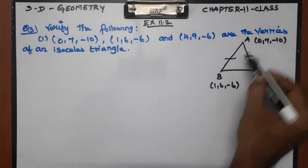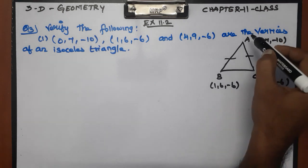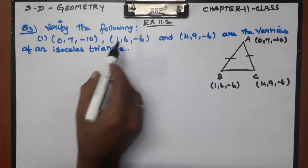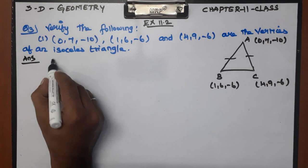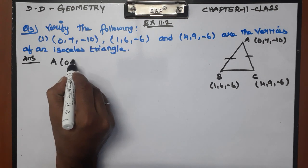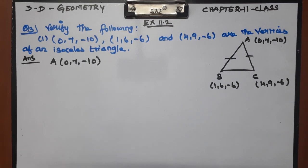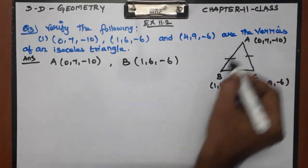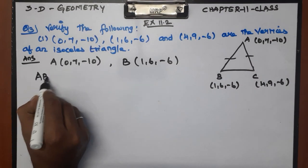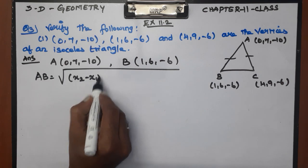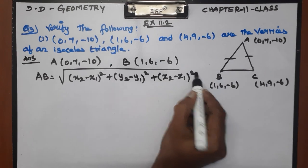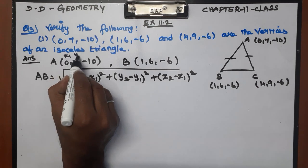An isosceles triangle has any two sides equal — AB = BC, or AC = BC. So we check the distances. The distance formula is: AB = √[(x₂−x₁)² + (y₂−y₁)² + (z₂−z₁)²].